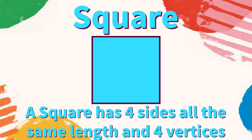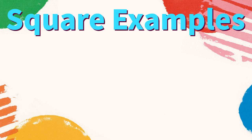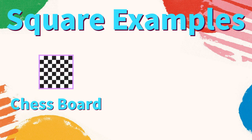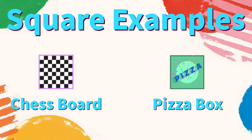Square: a square has four sides all the same length and four vertices. What are some examples of squares? A chessboard is square, a pizza box is also square. What are some other examples of squares?